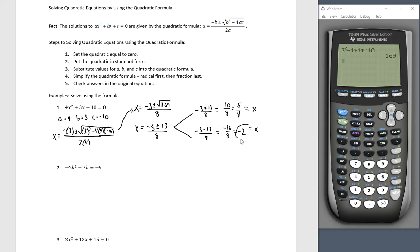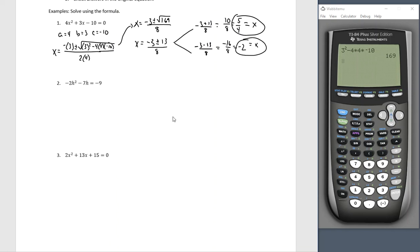X equals 5 fourths, x equals negative 2. When I get an answer like this, that tells me I could have factored it, but we're not working on factoring, we're working on the quadratic formula.